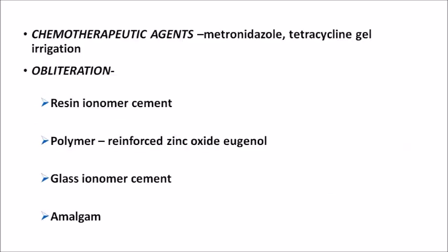Since mechanical therapy can be inadequate in the furcation area, we can resort to chemotherapeutic agents like metronidazole and tetracycline gel irrigation in the furcation area. We can also obliterate the furcation using resin ionomer cement, polymer-reinforced zinc oxide, glass ionomer cement, or even amalgam to fill and obliterate the furcation.